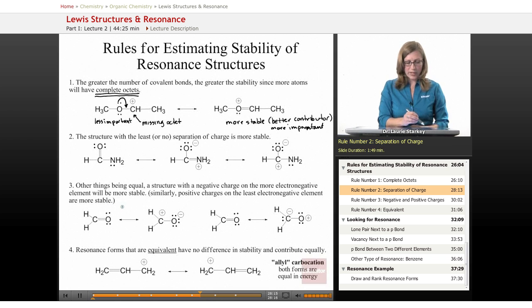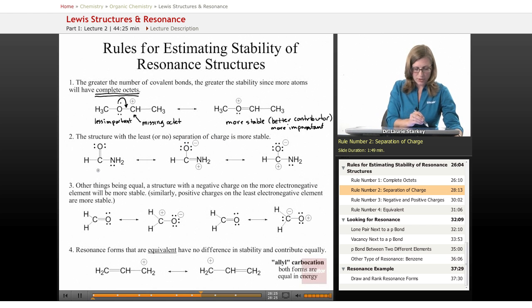Okay, another thing to look for is if we have a separation of charge, if we can avoid formal charges, that would be a very good Lewis structure. So if we compare this first structure to this next structure, those are both valid Lewis structures, but this is going to be the most important because this one has formal charges.